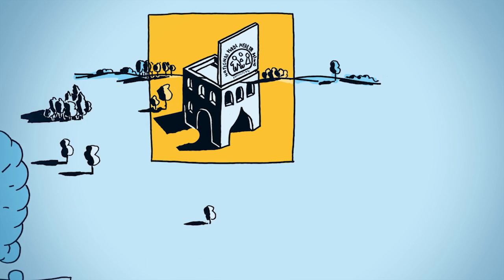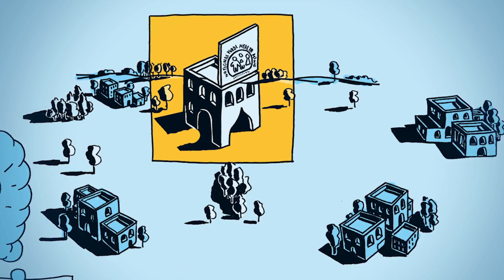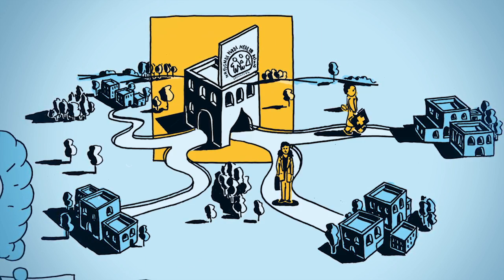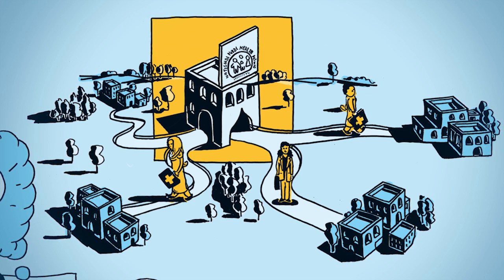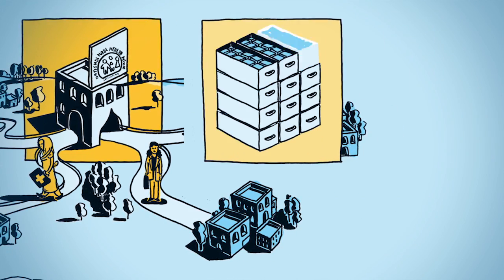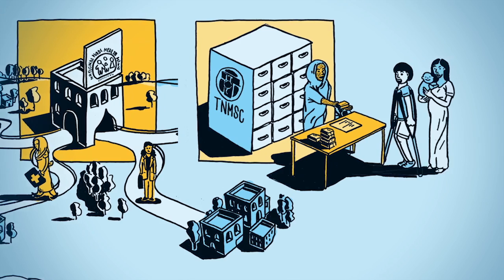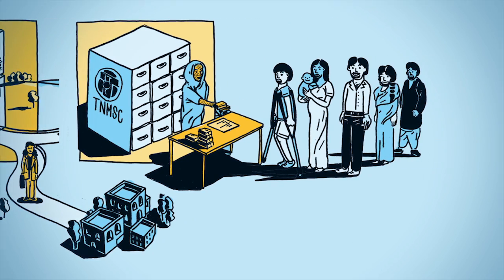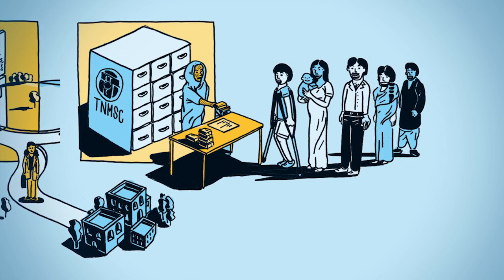The National Rural Health Mission, for example, has improved public health facilities and deployed more health workers in rural areas. Tamil Nadu has pooled drug purchase and rationalized distribution in public health facilities where medicines are now available at no cost to patients.